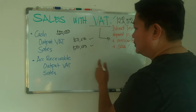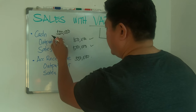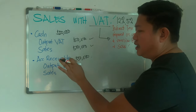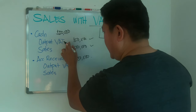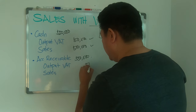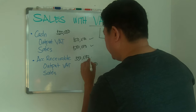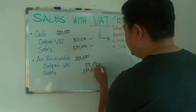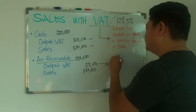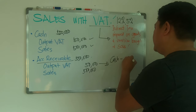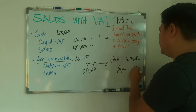If you sold on account, debit Accounts Receivable for 550,000 instead of cash. Accounts Receivable is a current asset. You still credit Output VAT and Sales of 500,000. Later, when you collect, debit Cash 550,000 and credit Accounts Receivable 550,000.